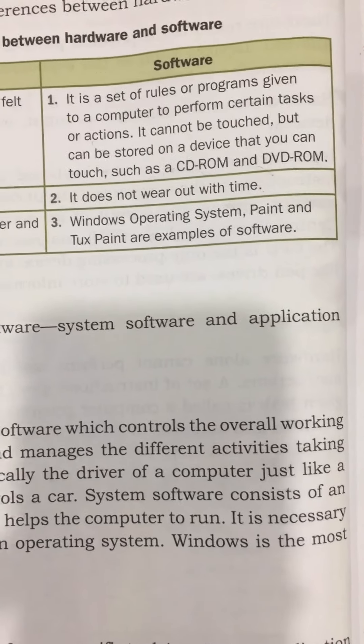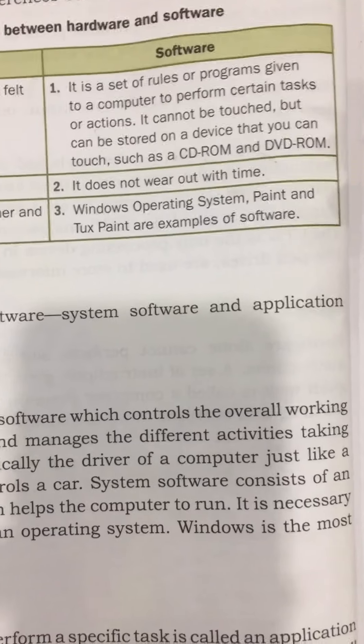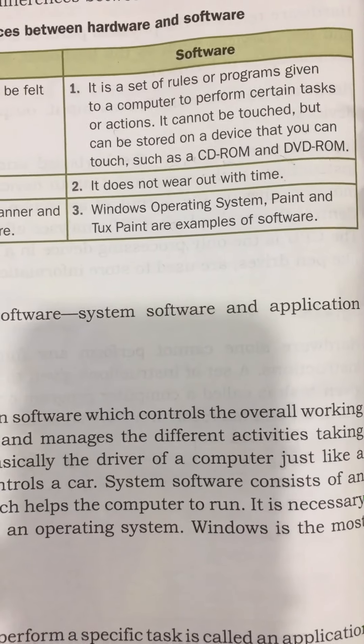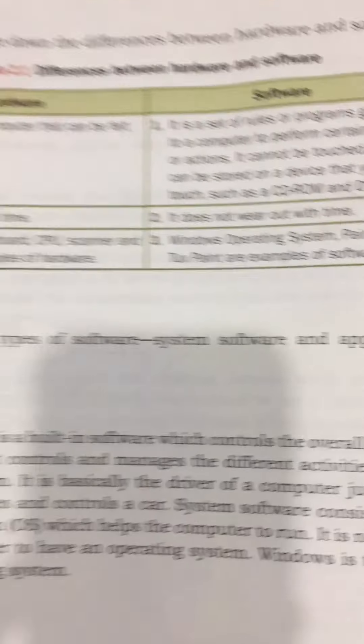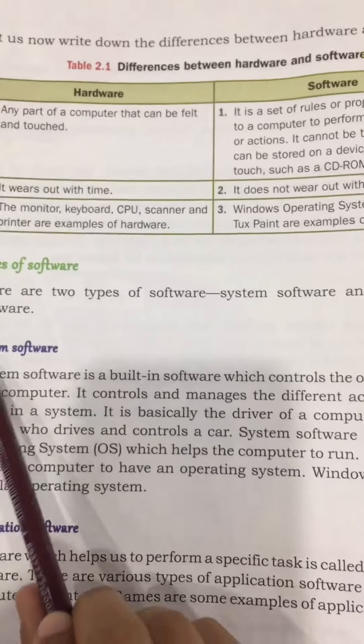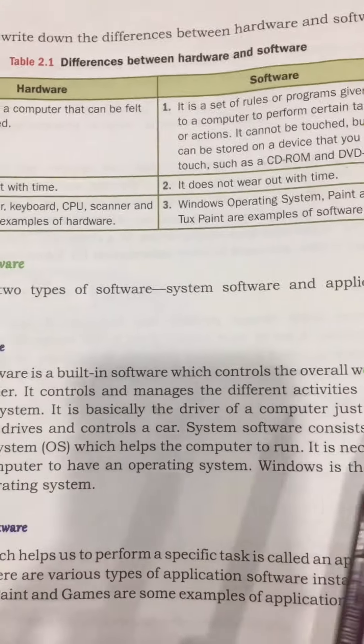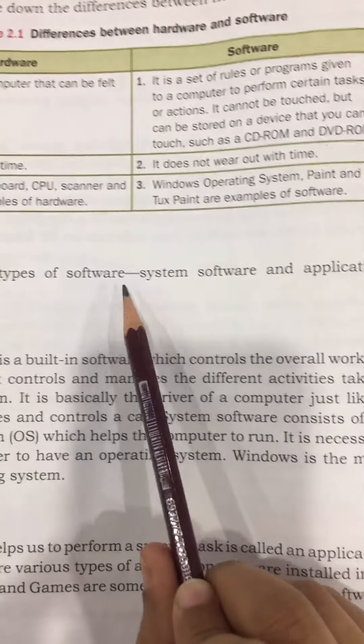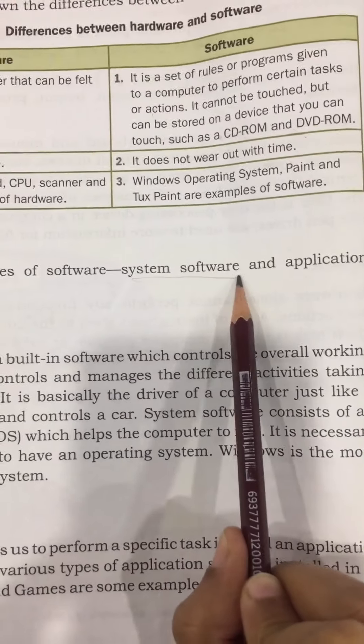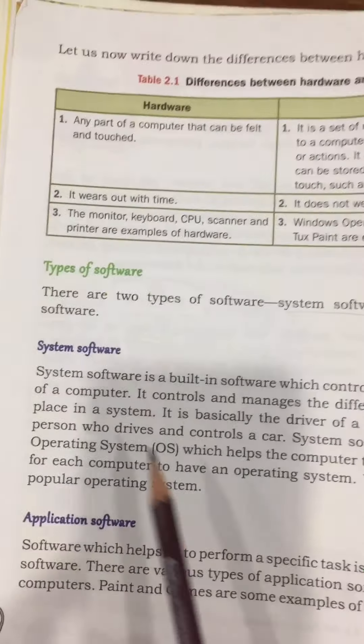MS Word and Excel are all examples of software. There are two types of software: one is system software and one is application software.